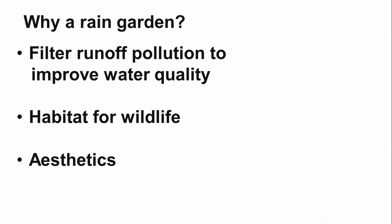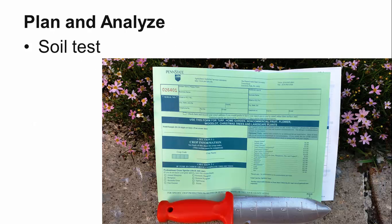A rain garden, particularly one utilizing native plants, provides food and shelter to numerous animals—insects, birds, mammals, reptiles, and amphibians. Finally, the most noticeable reason to have a rain garden is the aesthetic appearance of the garden and the landscape throughout the year.